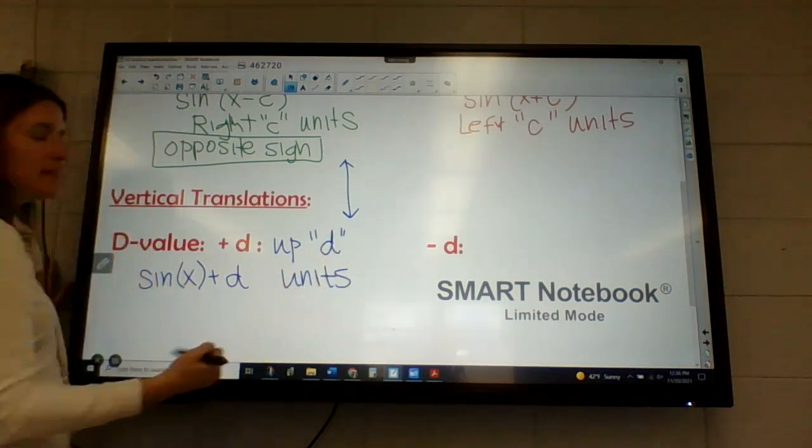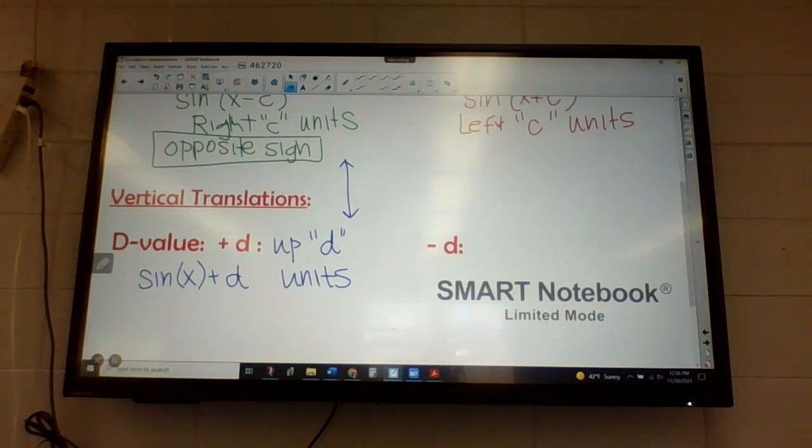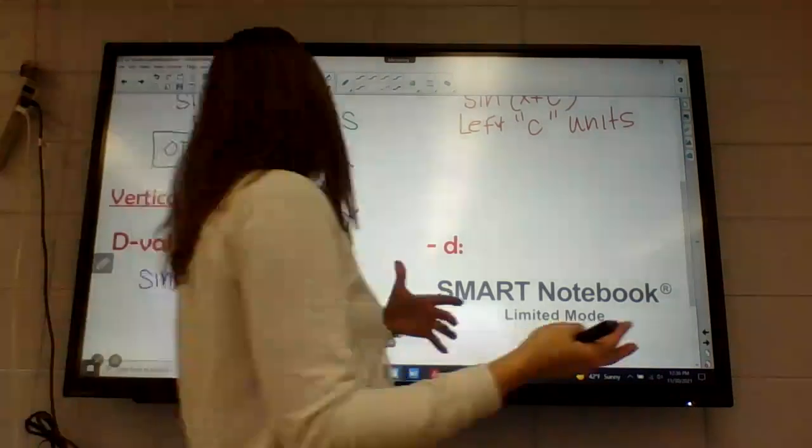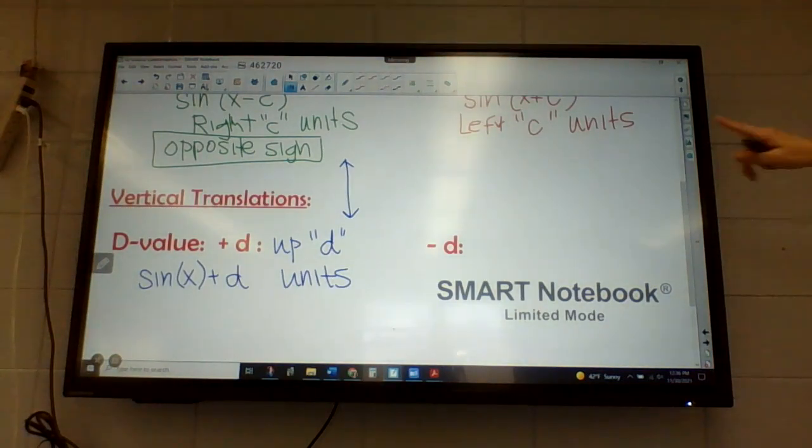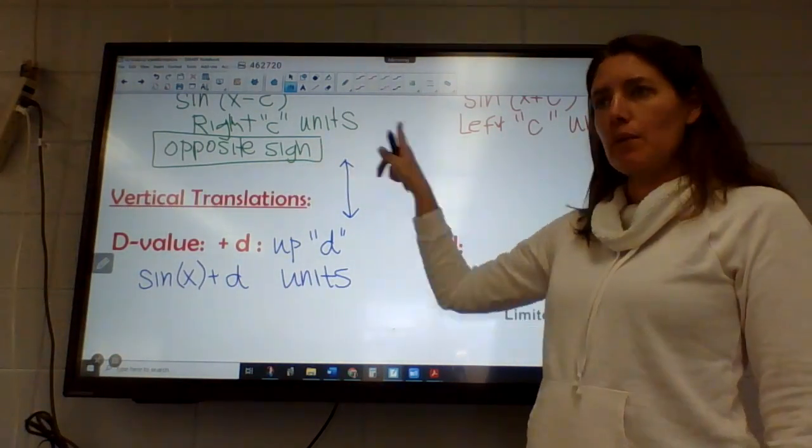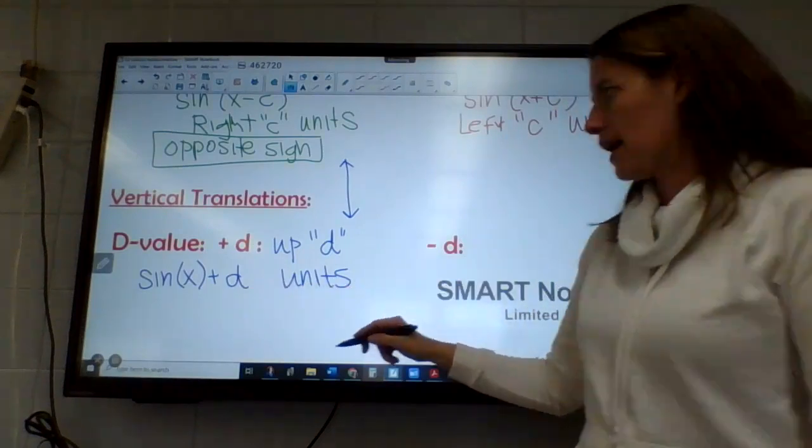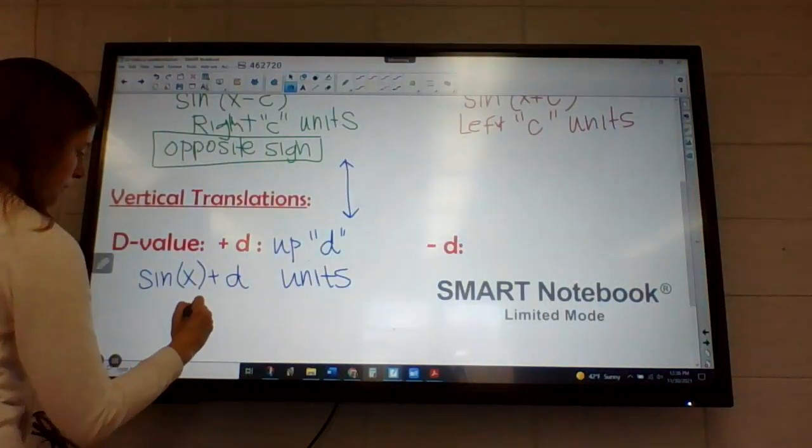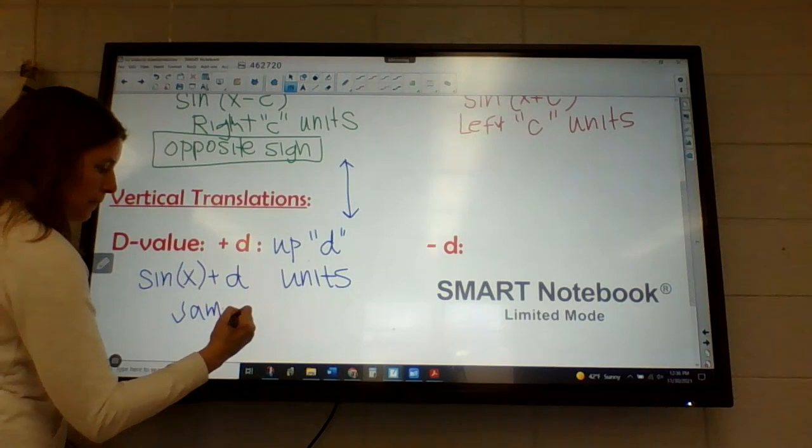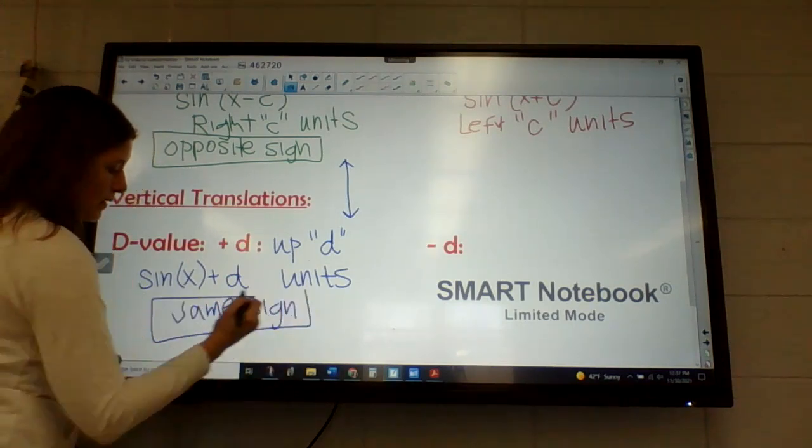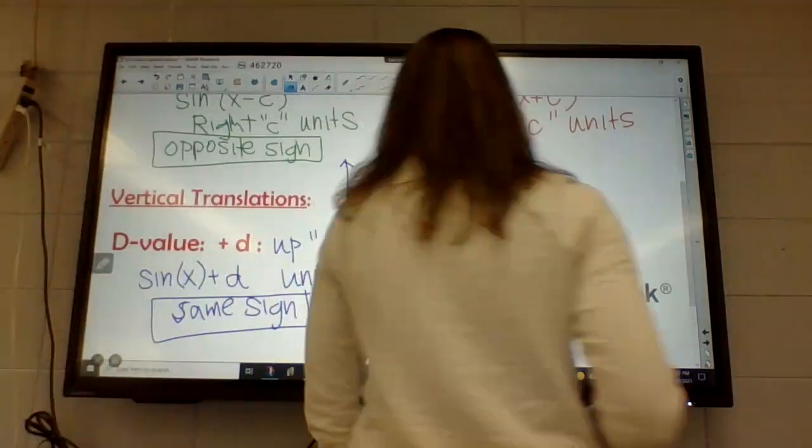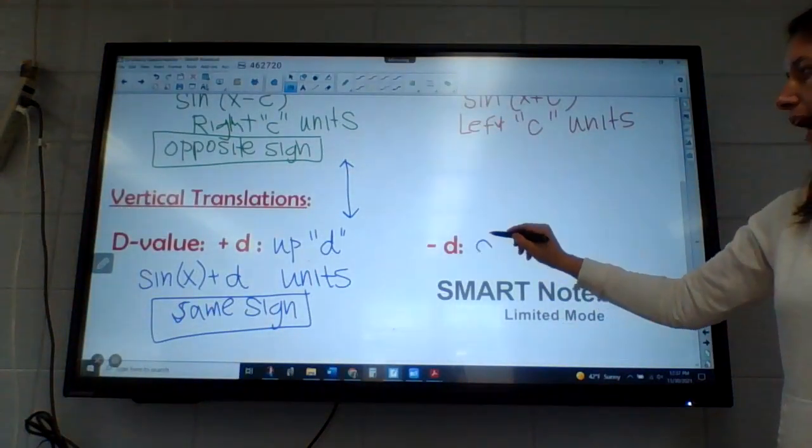Now this one, the sign wasn't the opposite of what we were expecting. So making sure that you understand that this one's positive, it looks positive. So this one's not the opposite sign like this one was up here. So this one's the same sign. It is confusing, so it's really easy to get that mixed up. And then this would be down.